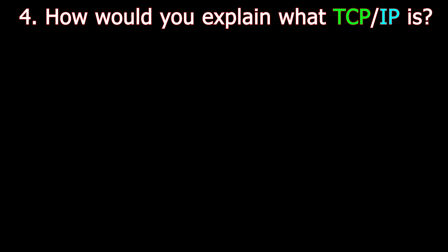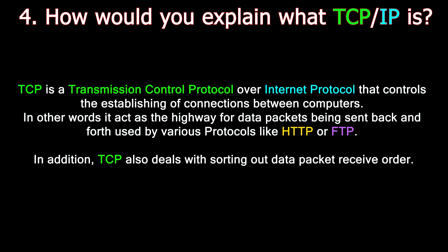Question number four: How would you explain what TCP over IP is? TCP is a Transmission Control Protocol over Internet Protocol that controls the establishing of connections between computers. In other words, it acts as the highway for the data packets being sent back and forth using various protocols like HTTP or FTP. In addition, TCP also deals with sorting out data packet receive order.